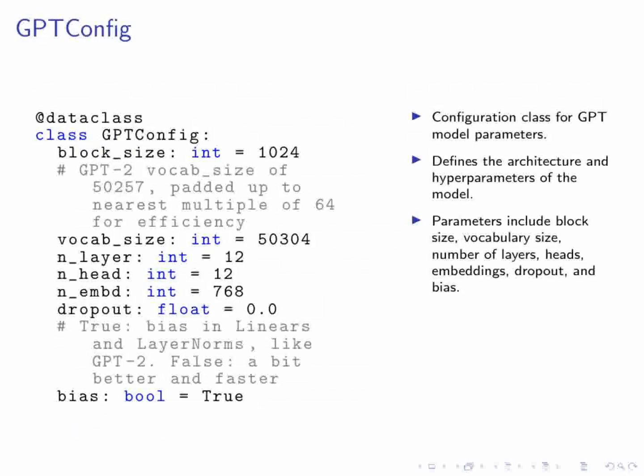Next, we have the GPT Config class. This is essentially a configuration class for defining the architecture and hyperparameters of the GPT model. Here, block_size specifies the maximum sequence length, while vocab_size defines the size of the vocabulary. The N_layer parameter sets the number of transformer layers, and N_head defines the number of attention heads in each self-attention layer. The N_EMBD parameter determines the dimensionality of the embeddings. Additionally, the dropout parameter sets the dropout rate for regularization, and the bias parameter specifies whether to include bias terms in linear and layer normalization layers.